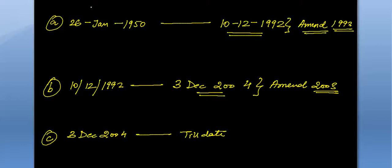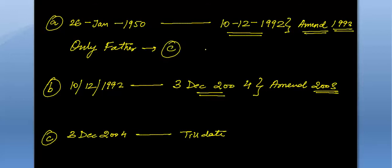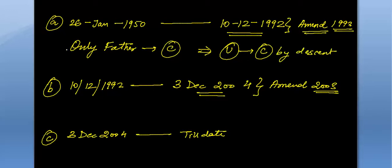If you are born between 26th January 1950 to 10th December 1992, we only check the nationality of your father. If your father is a citizen of India at the time of your birth, then you can be a citizen of India by descent, even though you are not born in India. In 1992 an amendment was brought and a provision was inserted into the citizenship rules.